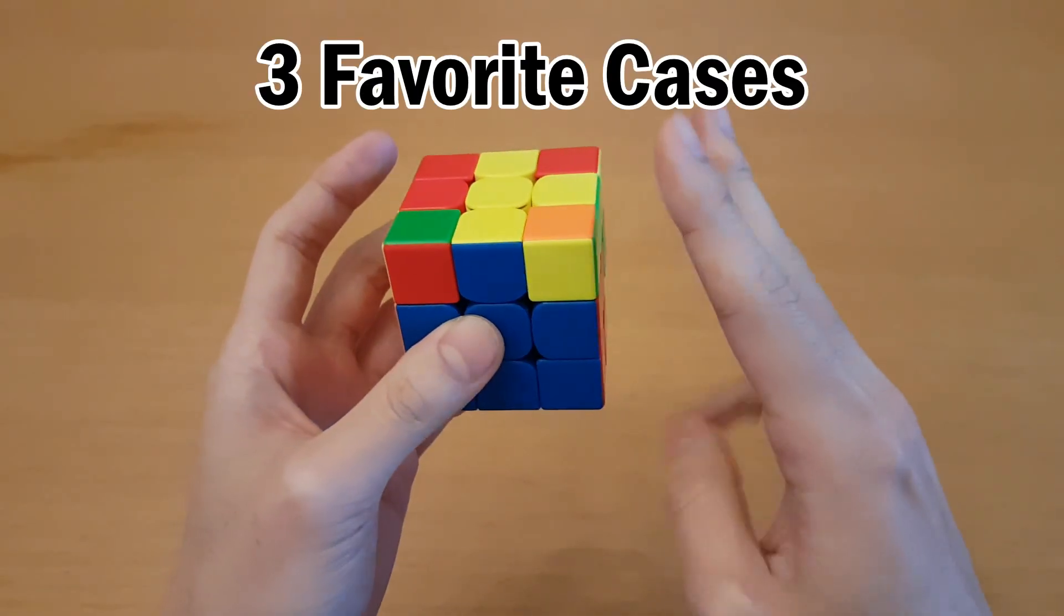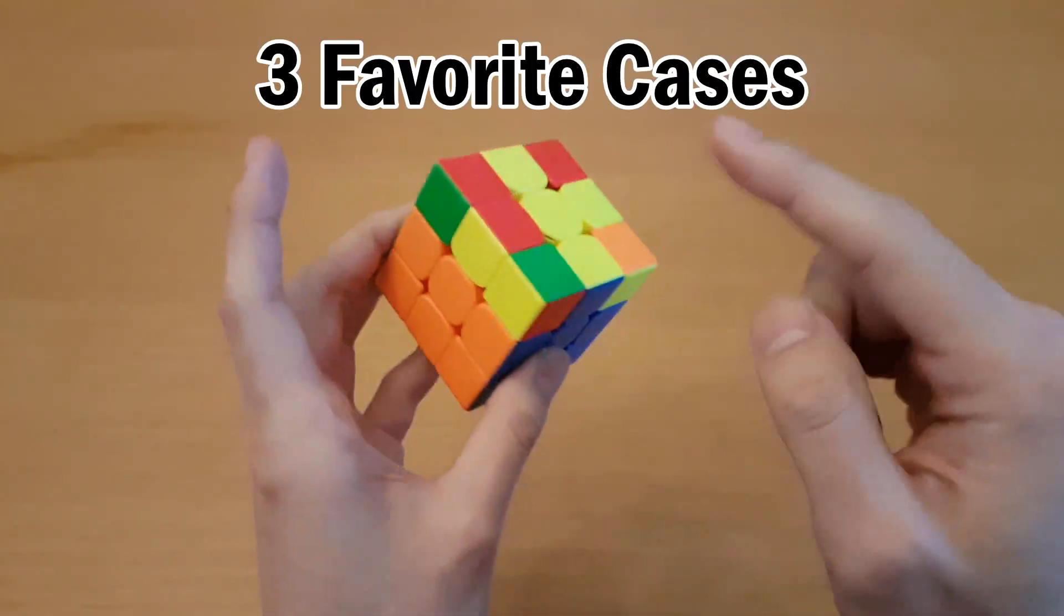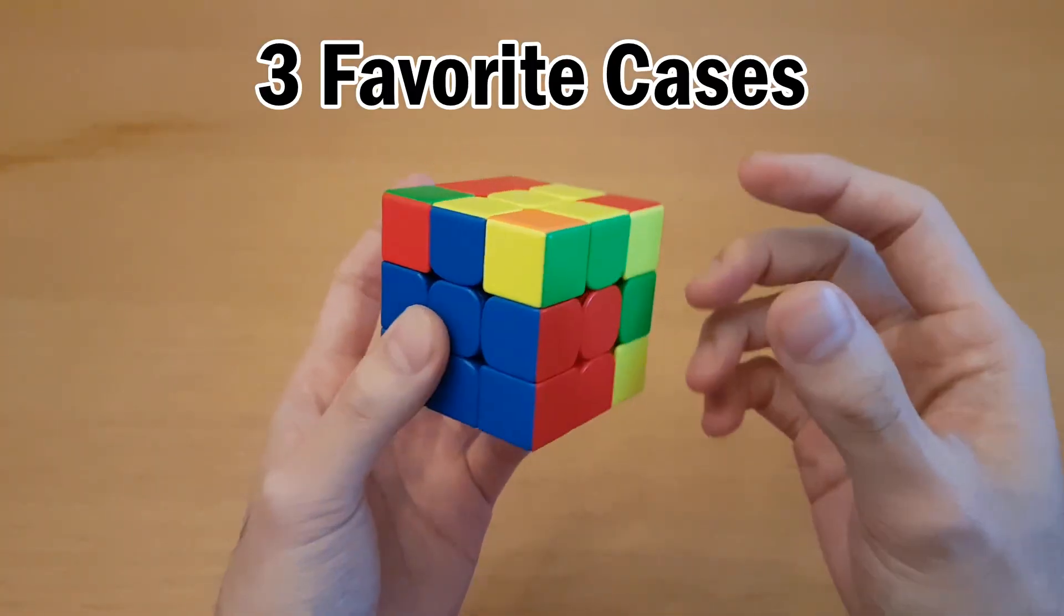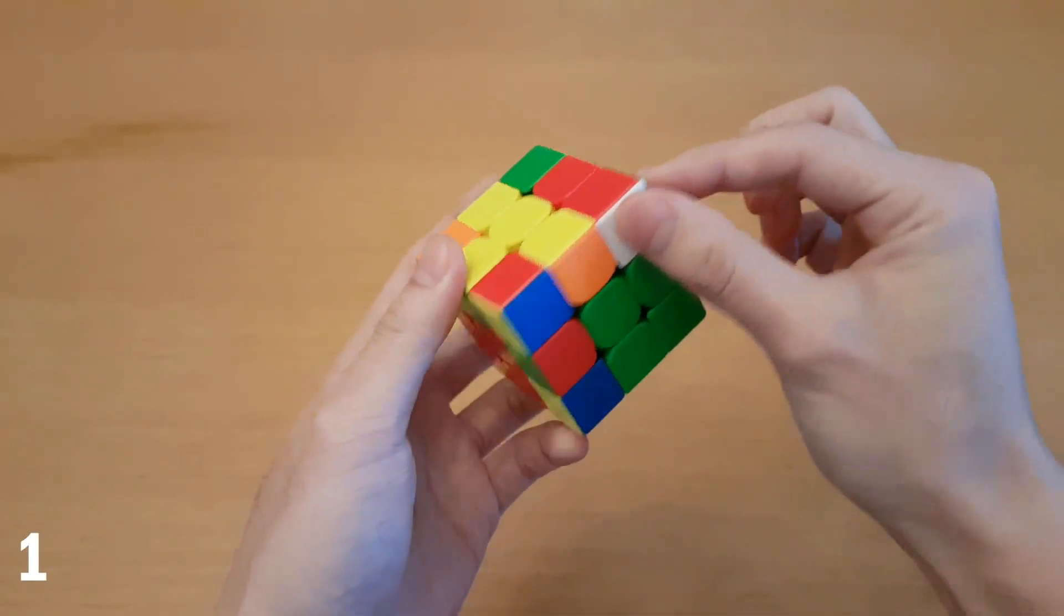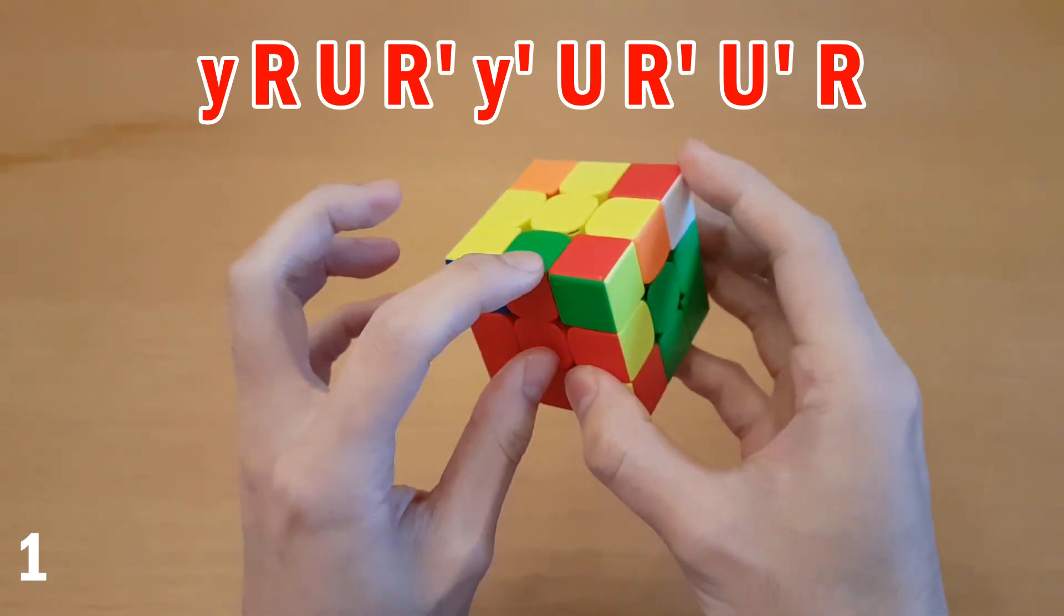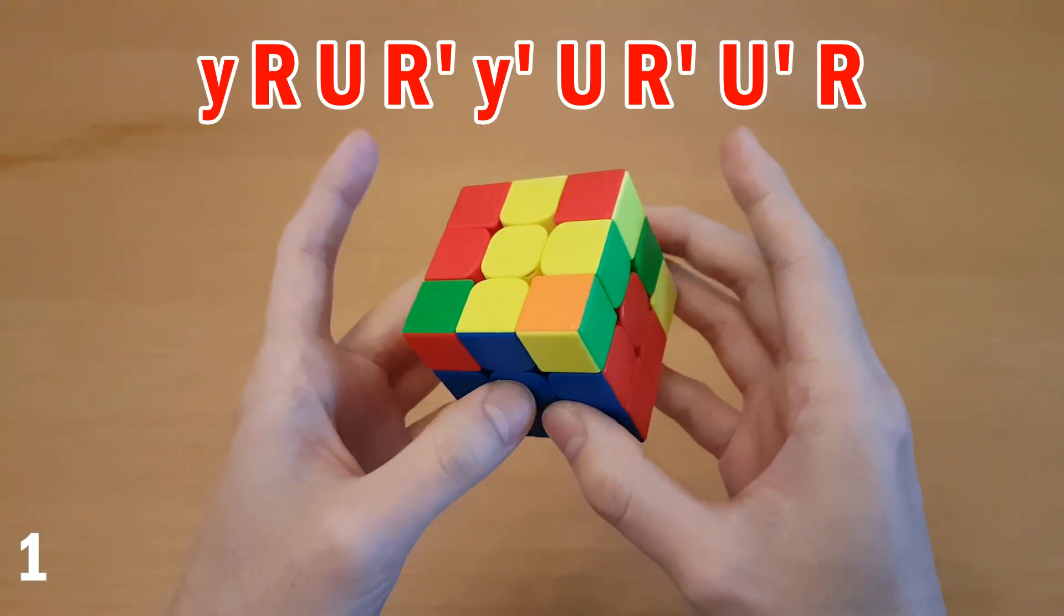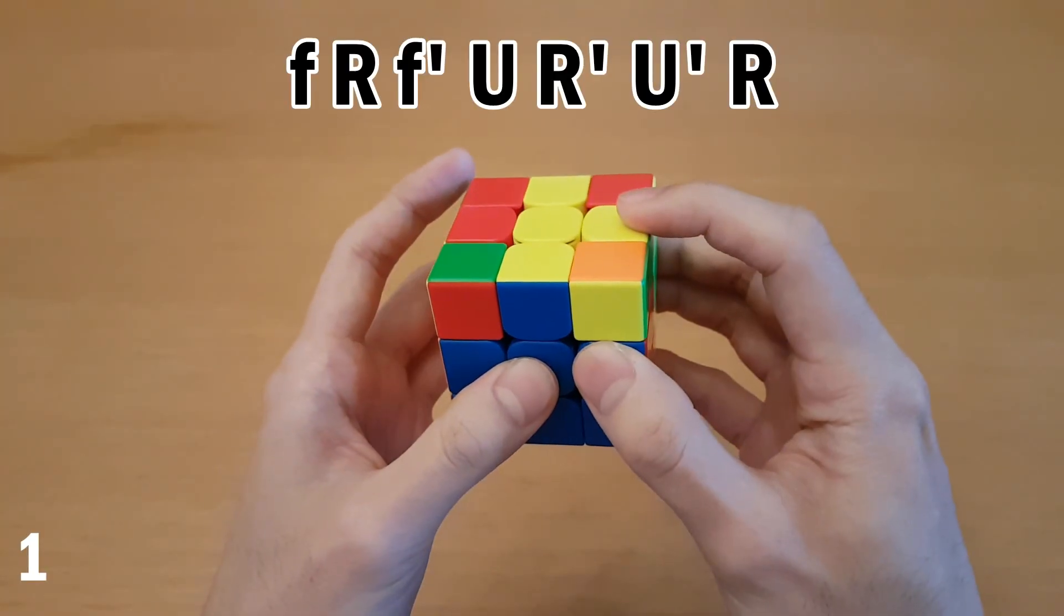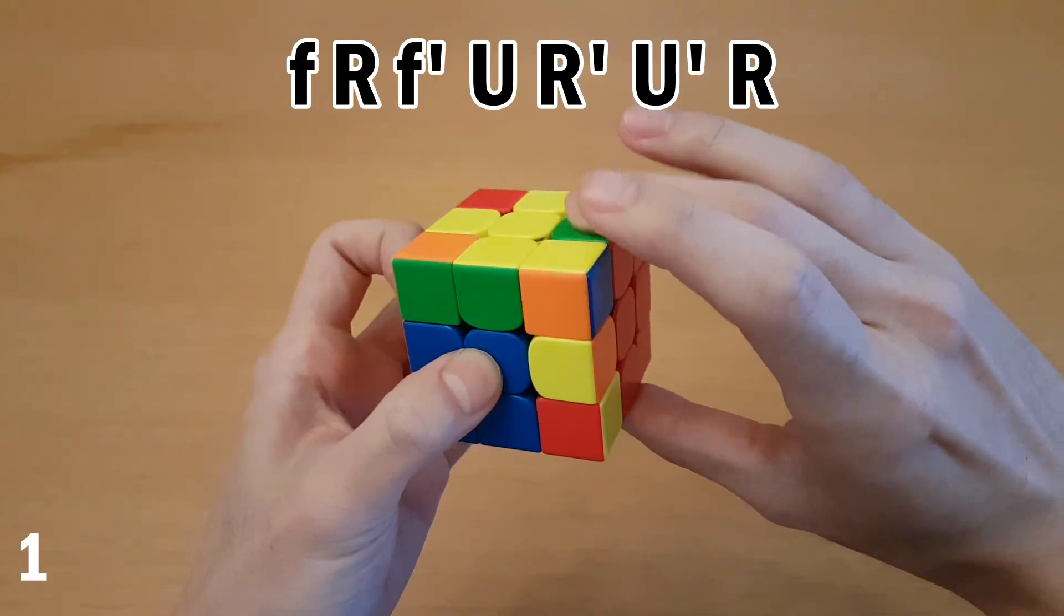Now I'm going to show my three favorite applications of this technique. These ones I really like because you can have all the slots solved, which means you can do them at any time, and they solve cases that are particularly bad. For this case with the flipped edge and the corner oriented like this, you would normally have to rotate and then do this to pair them up. So instead of that rotation followed by another rotation afterwards, you can get rid of all those just by doing this. That pairs them up, and then you can insert.